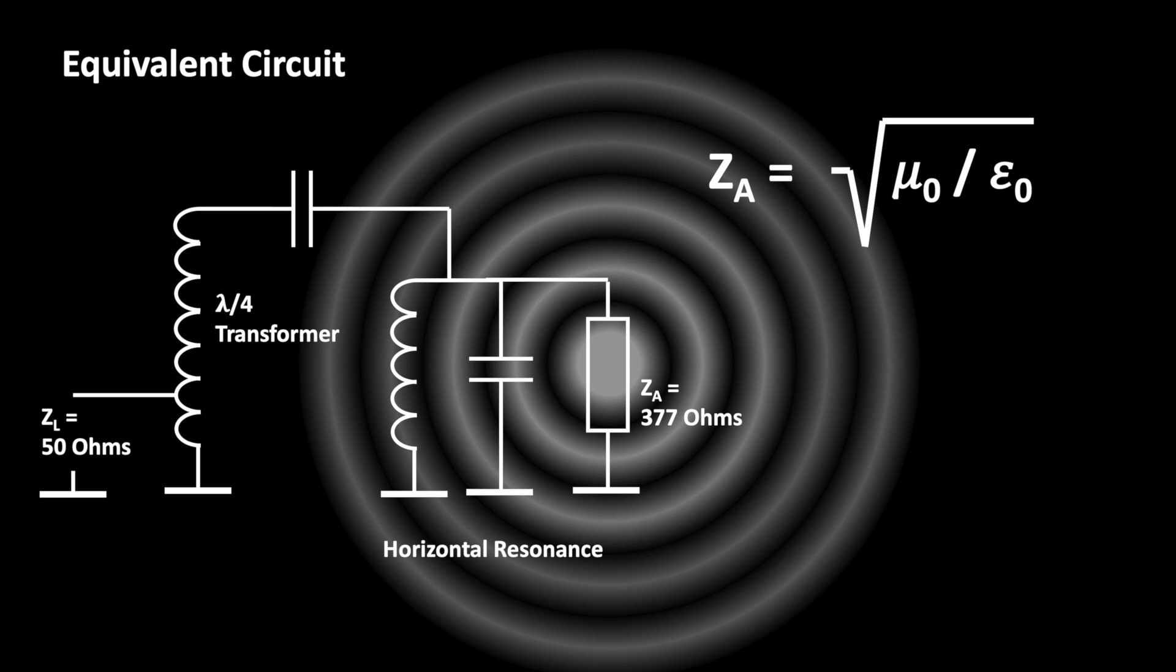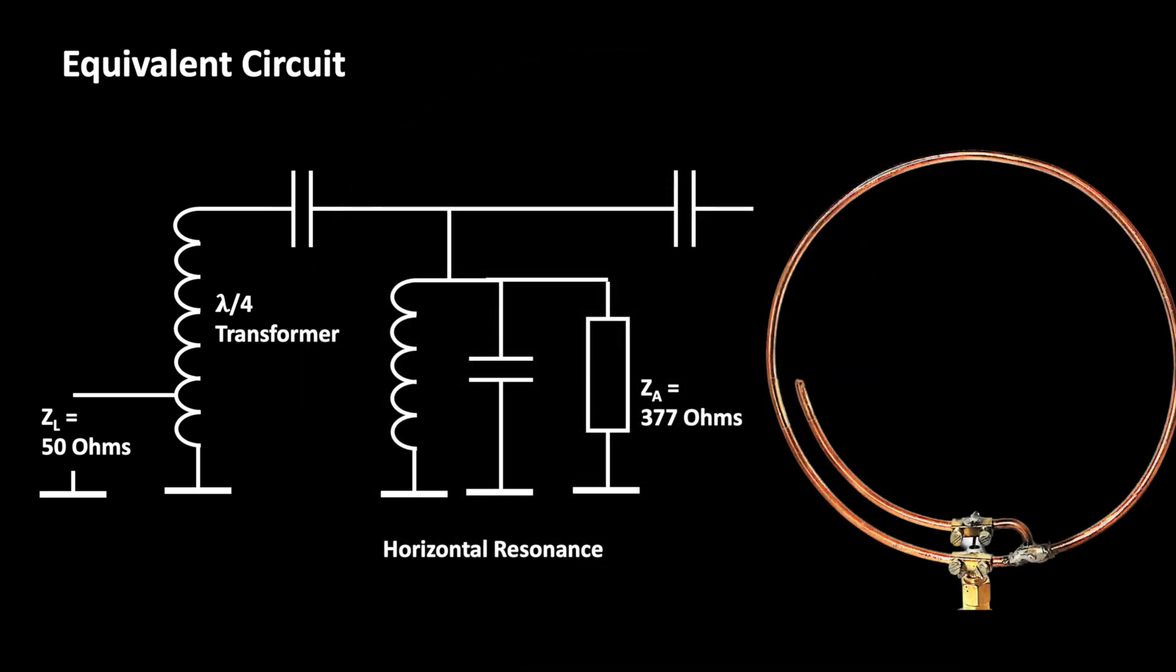In principle, an antenna is just a matching device, which transforms the impedance of our coaxial cable to the impedance of free space. This is how you can represent the radiation of an RF signal into free space as an equivalent circuit. First, a horizontal resonance is excited on the loop. The radiation characteristics is corresponding approximately to that of an antenna which consists of two stacked half-wave dipoles.